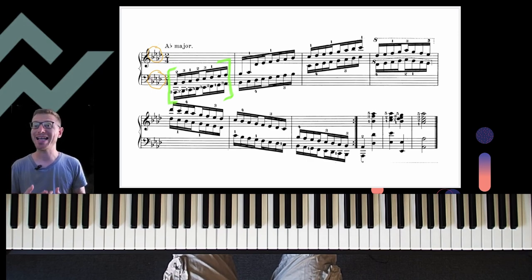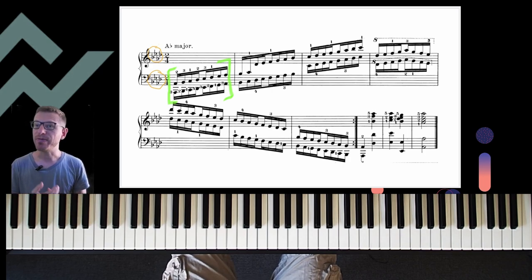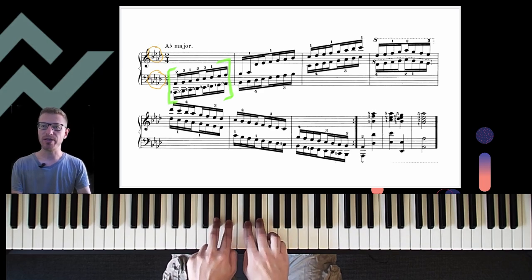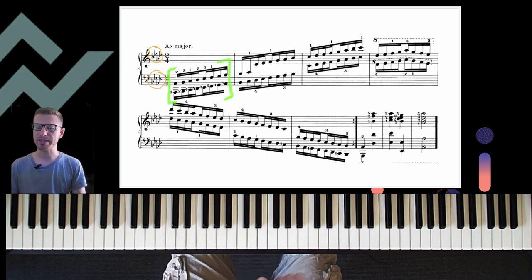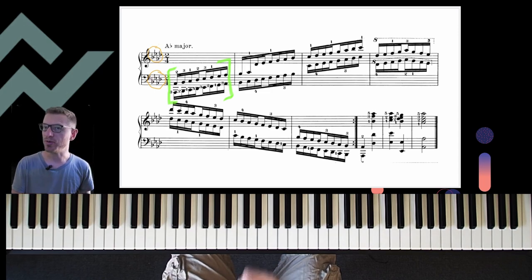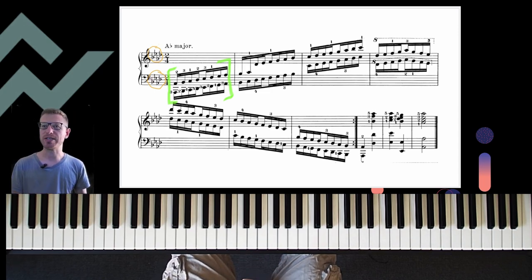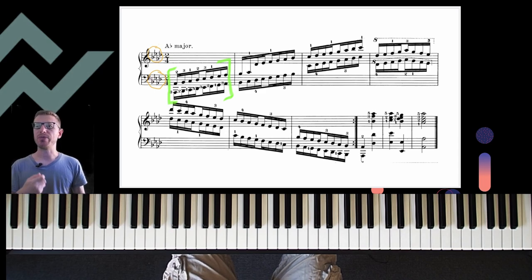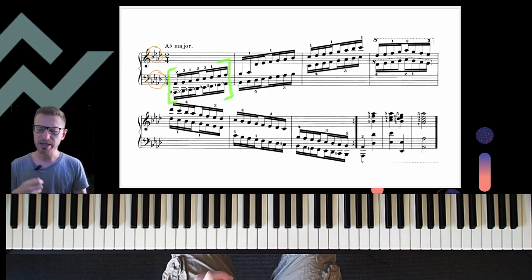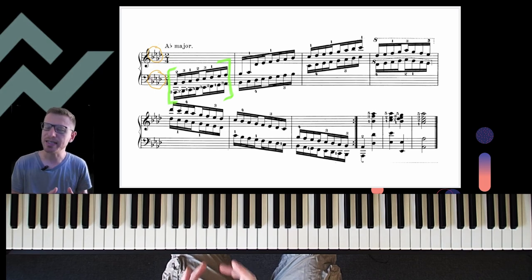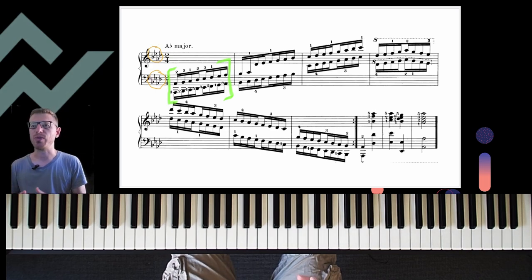The A-flat major scale has four accidentals: B-flat, E-flat, A-flat and D-flat. So these are the accidentals that we will be playing when we play the scale. The accidentals are increasing a little bit more. The black keys are increasing which means that we have to really pay close attention to the scales when we play them.